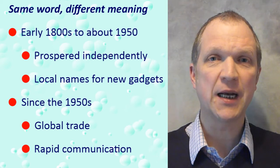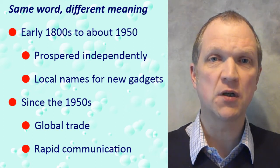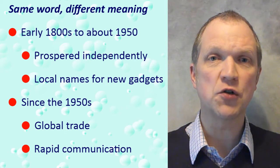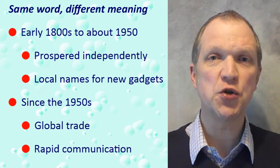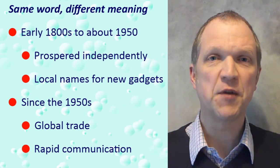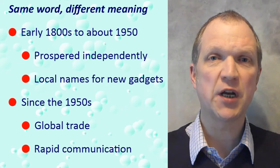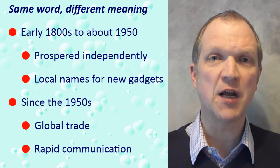This is because English-speaking settlements across the world started to prosper independently of each other from the early 1800s onwards. Therefore, when people started using a new gadget, they would often give it a local name. From the 1950s onwards, the increase in global trade and rapid communication meant that new inventions would usually have the same name across English-speaking countries.